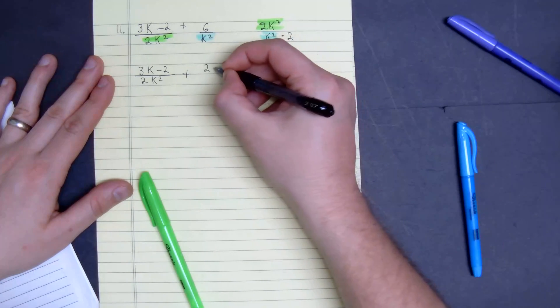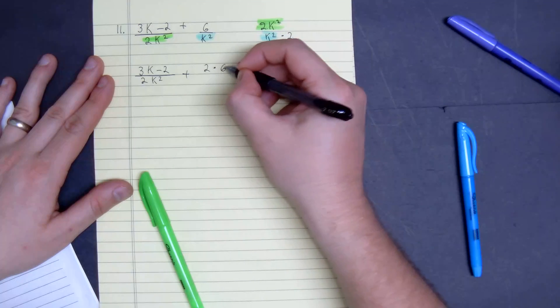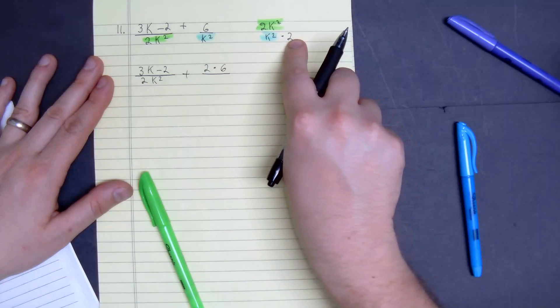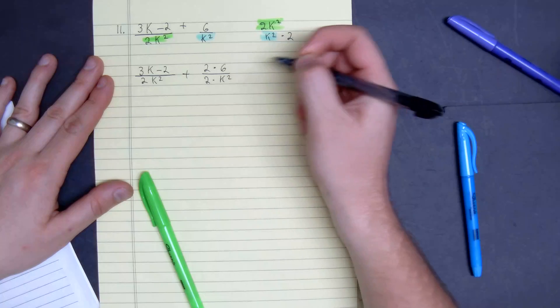So 2 times 6, because we multiply the whole thing by 2, and then 2 times k squared.